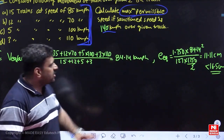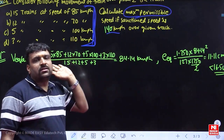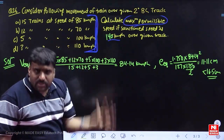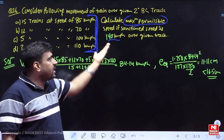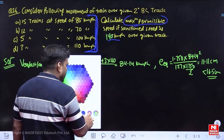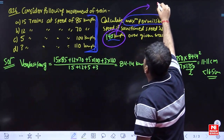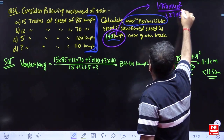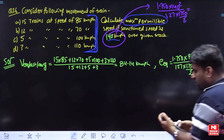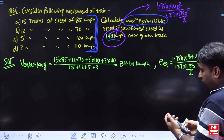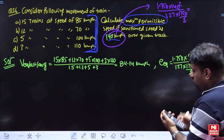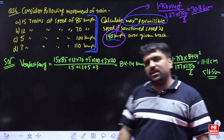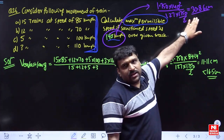This is what super elevation you have provided. Now just imagine — why are we asking maximum speed? Why are we not able to run Vande Bharat Express? Let us try if we can run it at 140 kmph. Just calculate what is its demand: 1.750 × 140² / (127 × 875). The demand comes out to be 30.86 centimeters — let's say 31 centimeters.